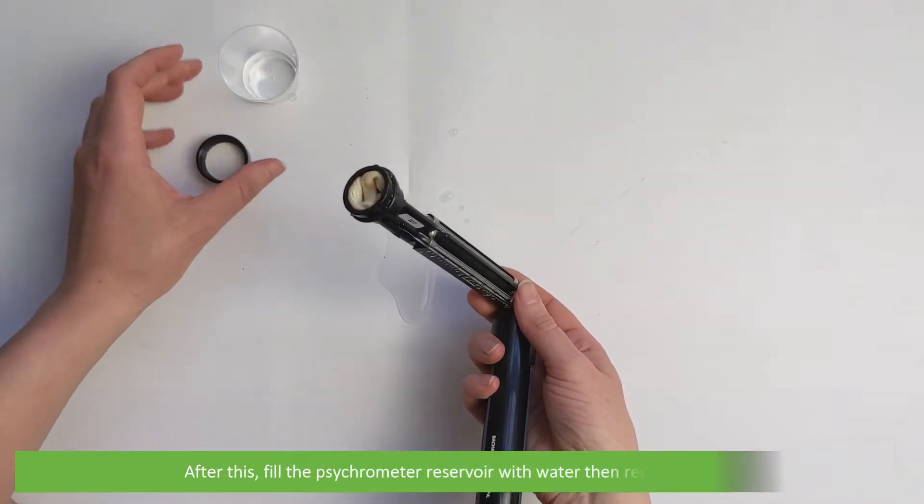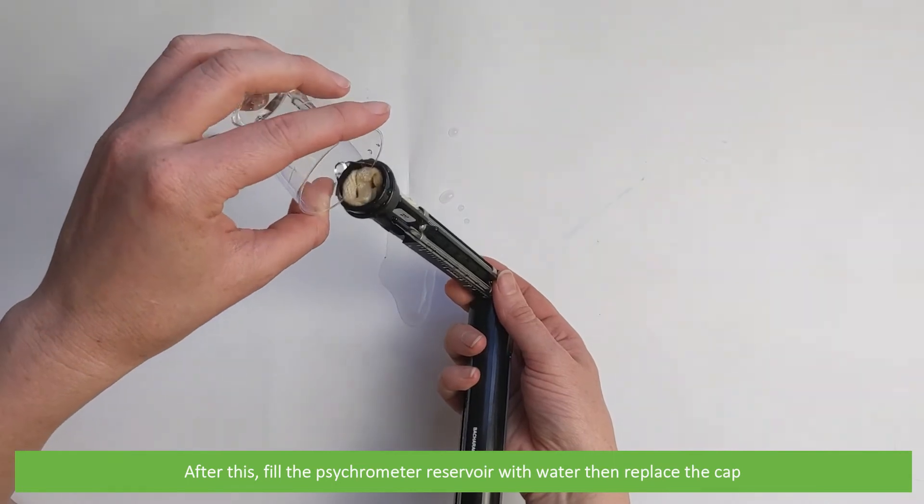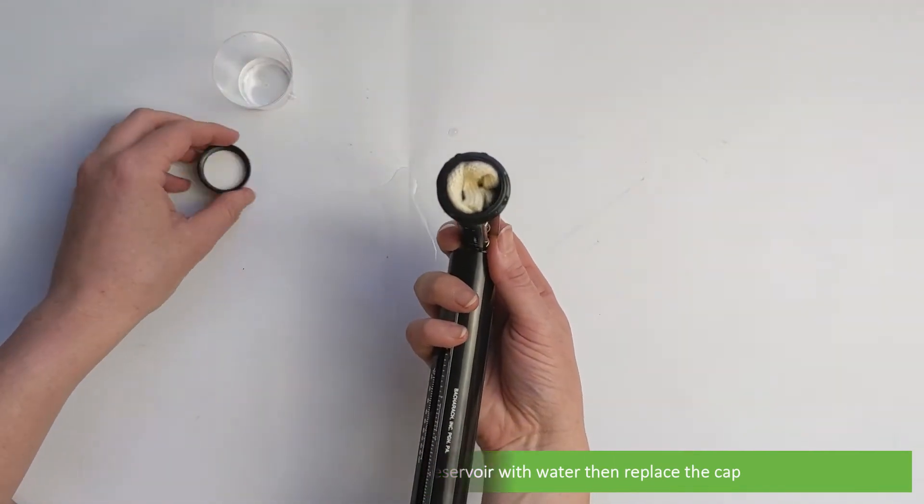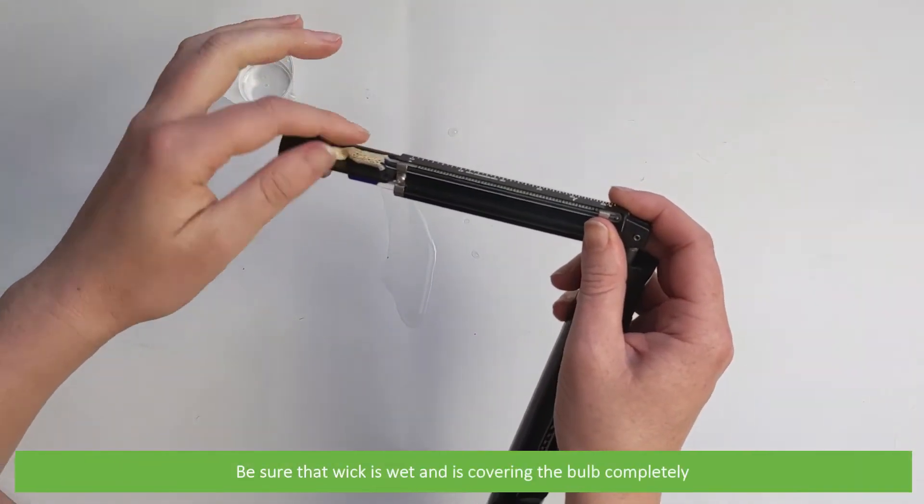After this, fill the psychrometer reservoir with water and replace the cap. Be sure that the wick is wet and covering the bulb completely.